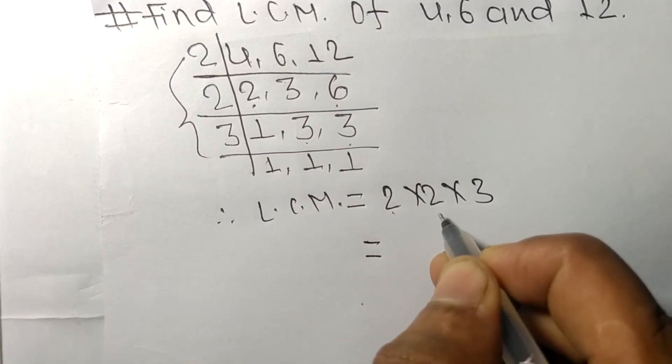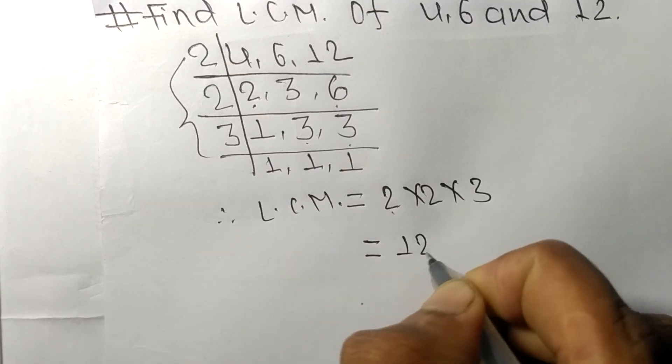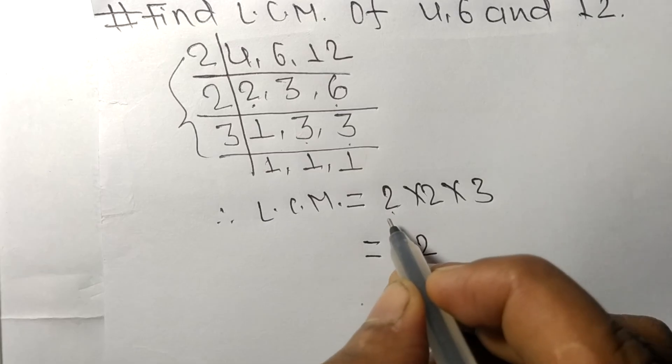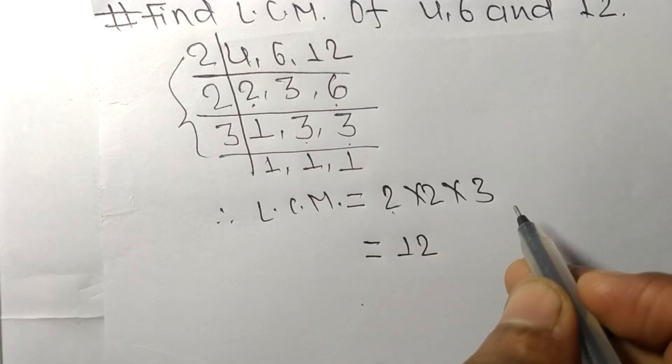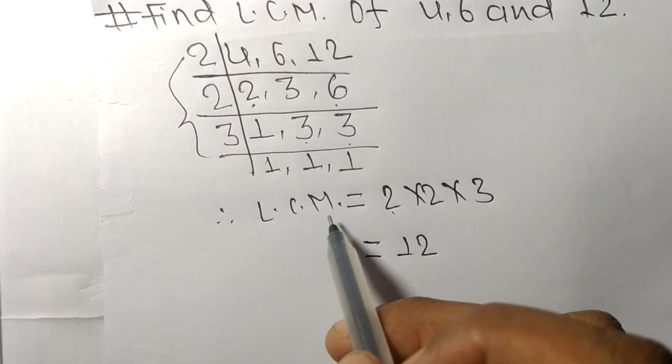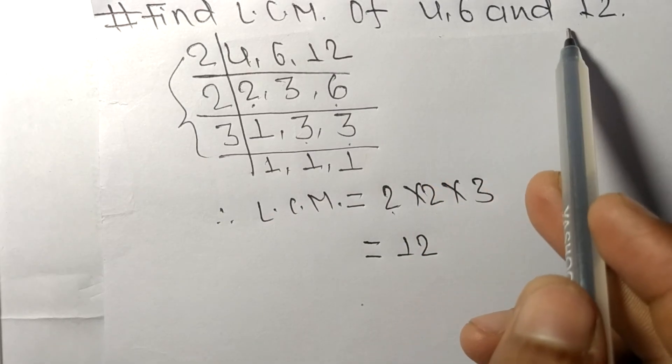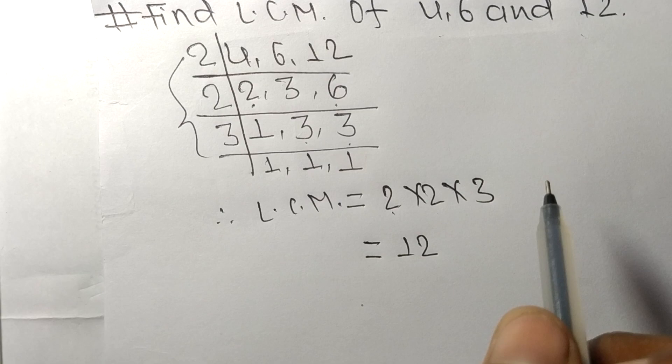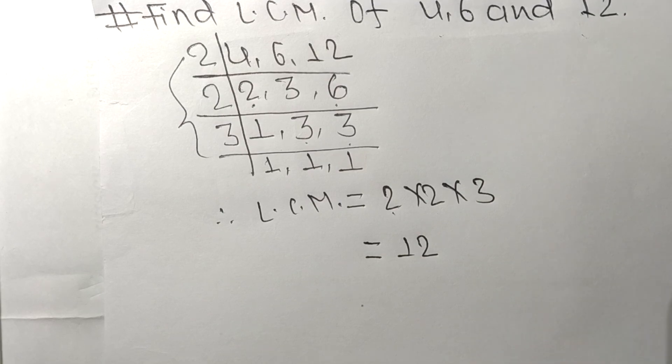So 2 times 2 means 4, 4 times 3 means 12. By multiplying all these numbers, we get 12. So 12 is the LCM of 4, 6, and 12. Thanks for watching.